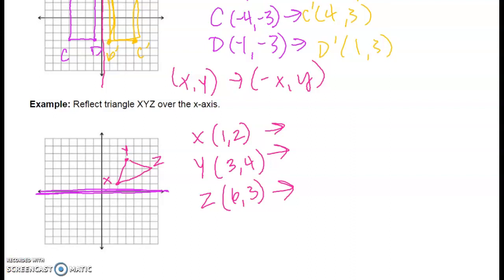X is one unit away from the line of reflection, so X prime is also going to be one unit away. X prime is now at (1, -2). Y is four units away from the line of reflection, so Y prime is going to be four units away — Y prime is at (3, -4). And Z is three units away, so Z prime is also going to be three units away. Z prime is going to be at (6, -3). When I connect my points, I can see that my shape is the same shape, the same size — it's just been flipped over the x-axis.